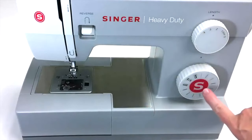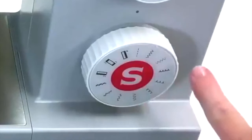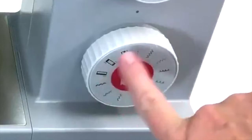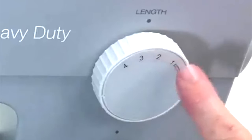On my machine I also have a dial for the different stitches: the straight stitch, zigzag, some decorative stitches, and then the buttonhole stitches. This dial up here is for the stitch length.